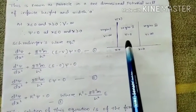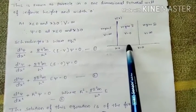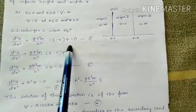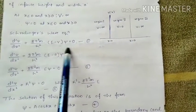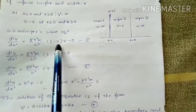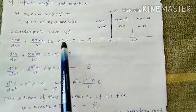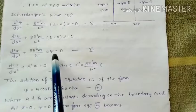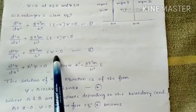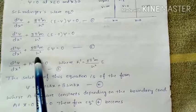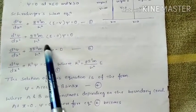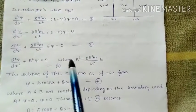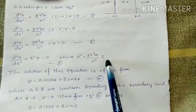The particle is present only inside the well, and only there can psi have some values. From the Schrödinger wave equation, we substitute V equals 0 because the potential energy is 0 inside the well. This changes the equation, and we take all remaining terms as the constant k squared, where k squared equals 8π²m divided by h² times E.